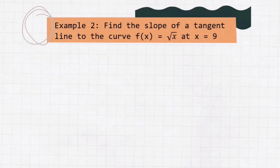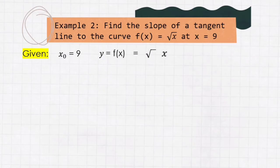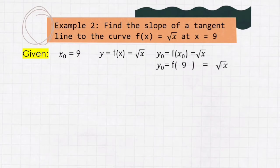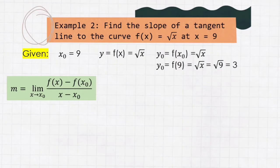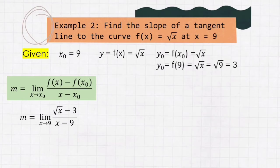For example number 2: Find the slope of a tangent line to the curve f(x) = √x at x = 9. The given are x₀ = 9, y = f(x) = √x, and y₀ = f(x₀) = √9 = 3. Using the second formula, m = limit of (f(x) − f(x₀)) / (x − x₀) as x approaches x₀. Substituting, we get m = limit of (√x − 3) / (x − 9) as x approaches 9. To solve this equation, we need to conjugate or rationalize.